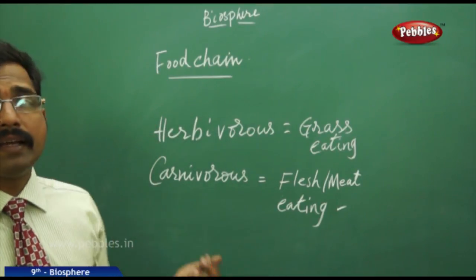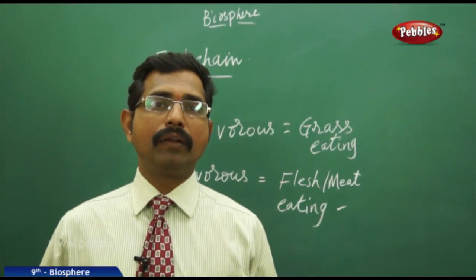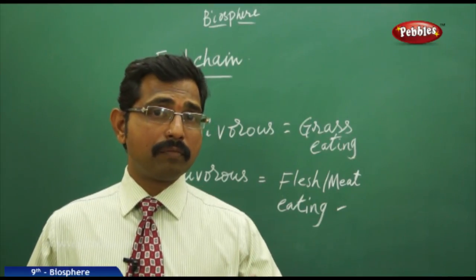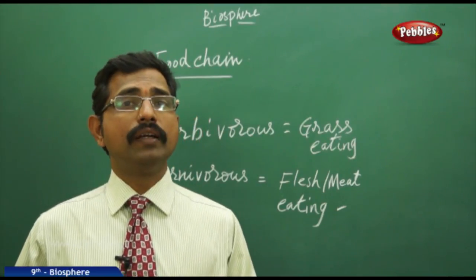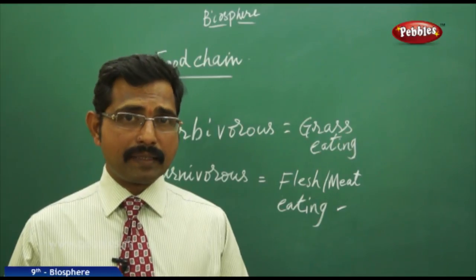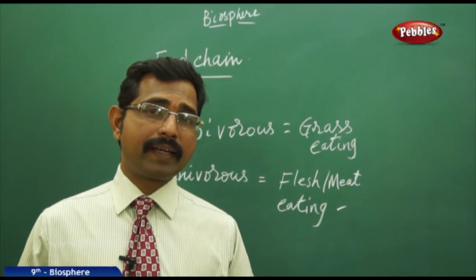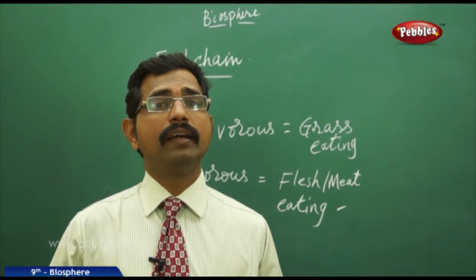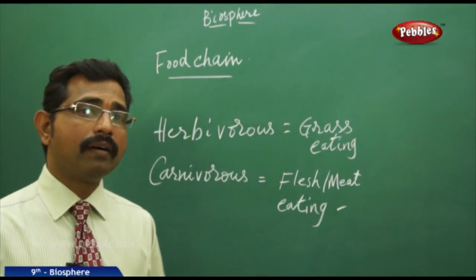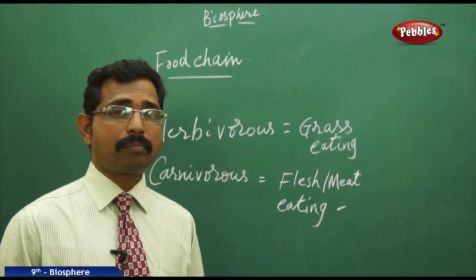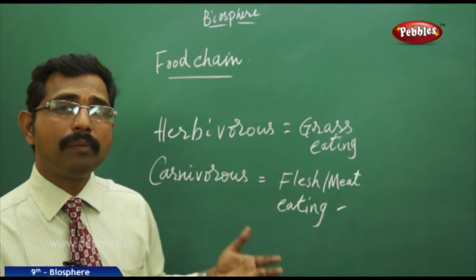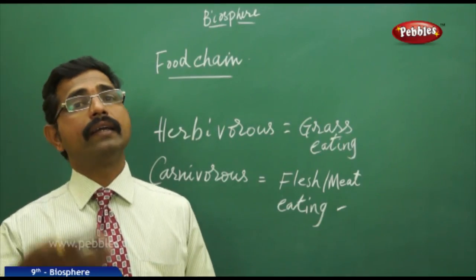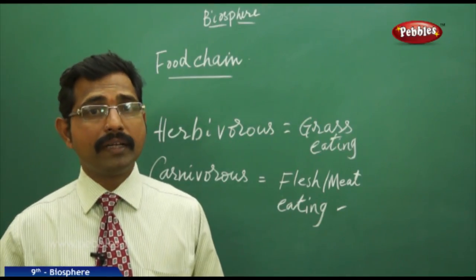Bacteria available in the soil help nitrogen to fix in the soil. Plants need nitrogen, and again these bacteria store nitrogen in the soil, helping other plants. Likewise, plants help other animals and those animals in turn help the larger, bigger animals.